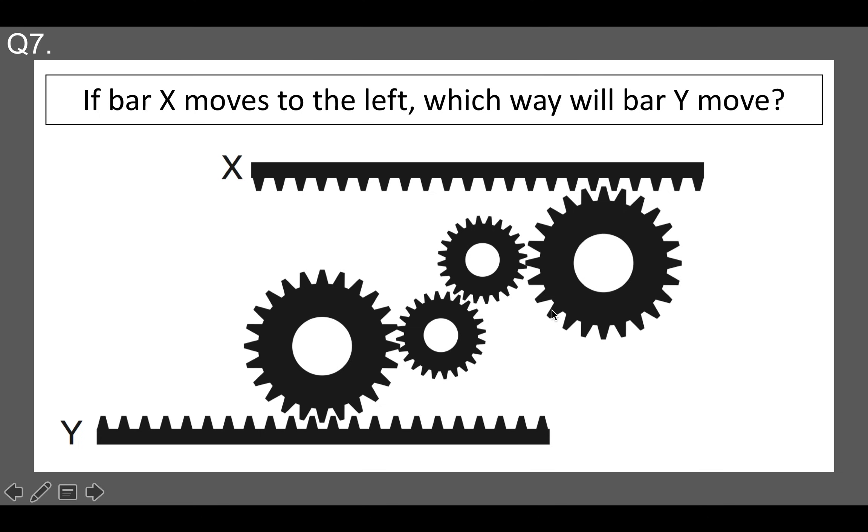Question seven is a trickier one, getting more in depth. Now, if bar X moves to the left, which is that way, which way will bar Y at the bottom move? So if X is going to the left, then we can work out that the large cog that's attached to it will go anti-clockwise, which means the one next to it will go clockwise.